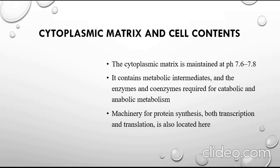The cytoplasmic matrix is the most important part of the cell — the majority of the components and machinery are present within it. The pH is kept neutral because the majority of enzymes and chemicals work at that particular pH. Multiple coenzymes and enzymes required for catabolic and anabolic metabolism are present in this cytoplasmic matrix.